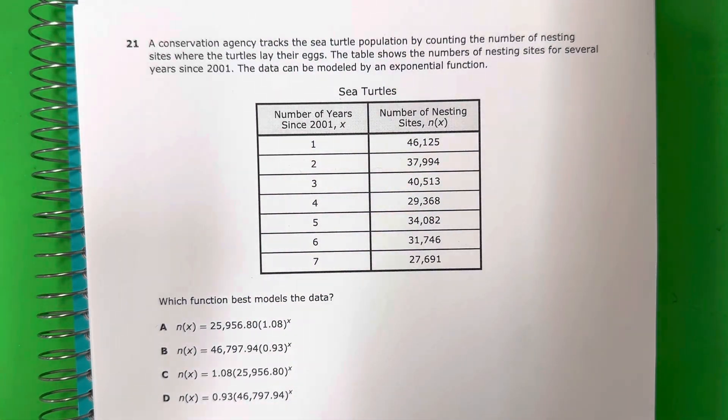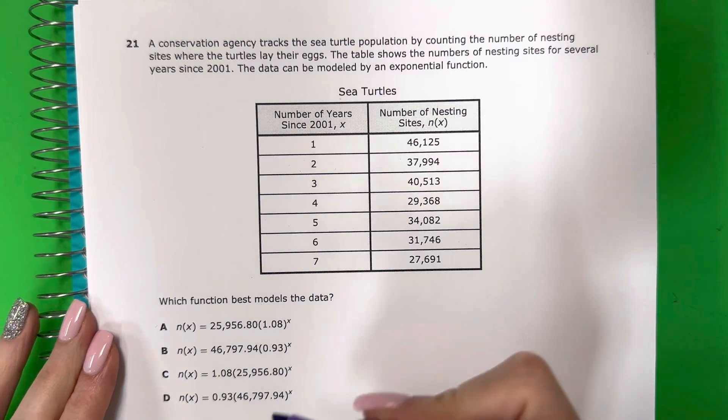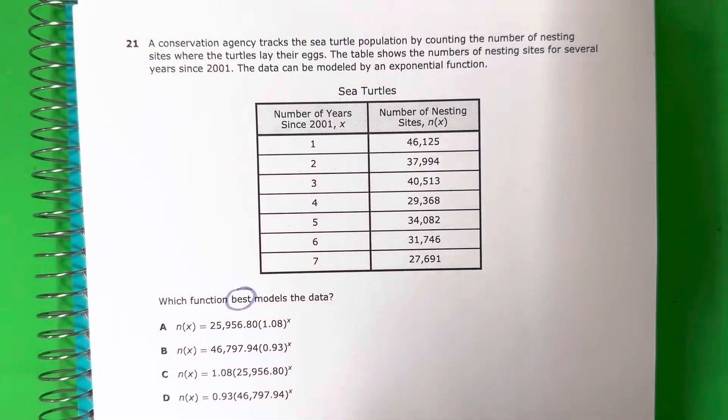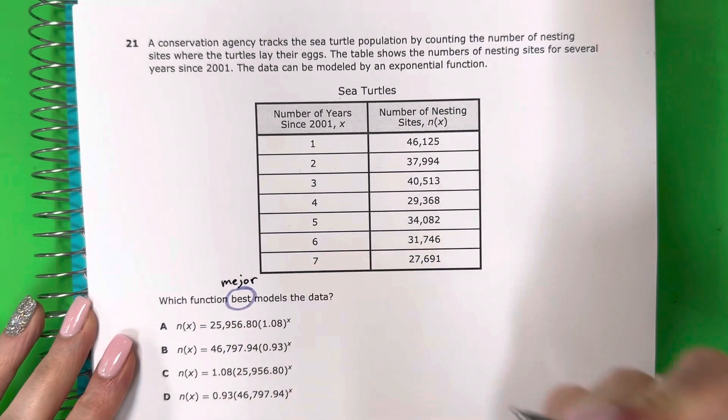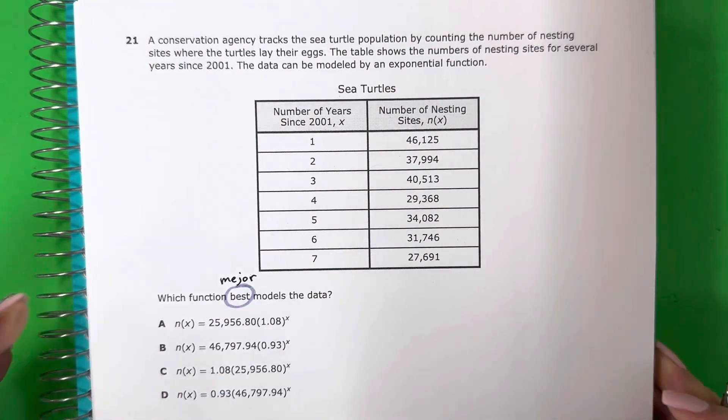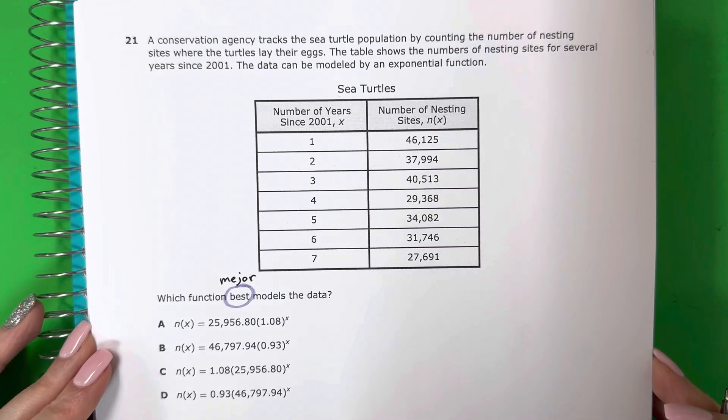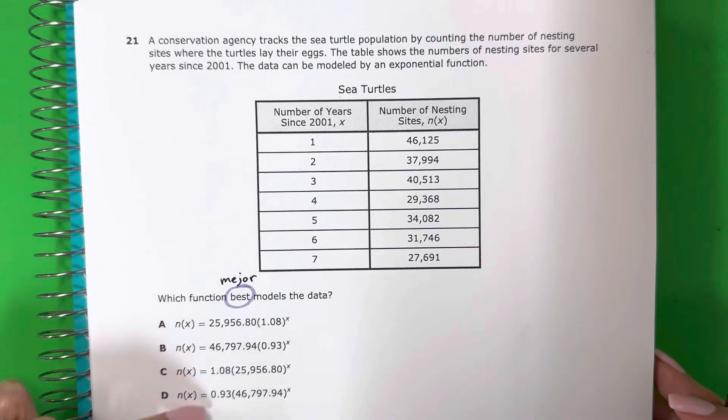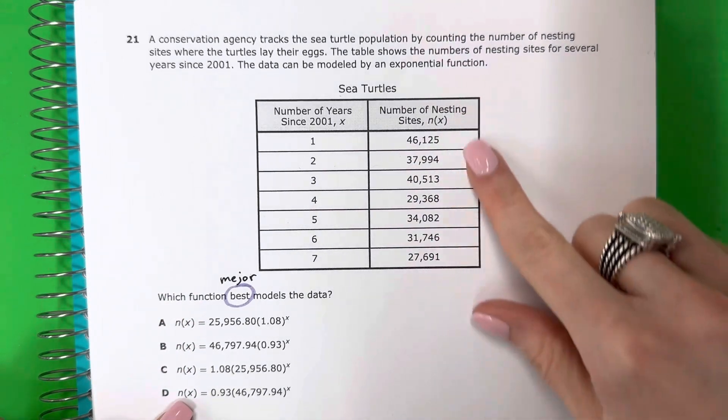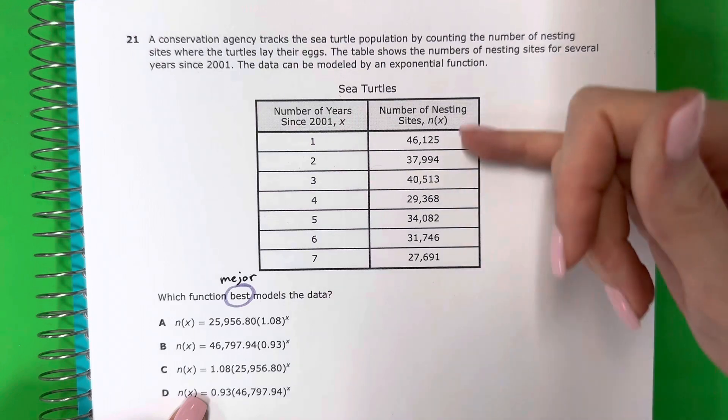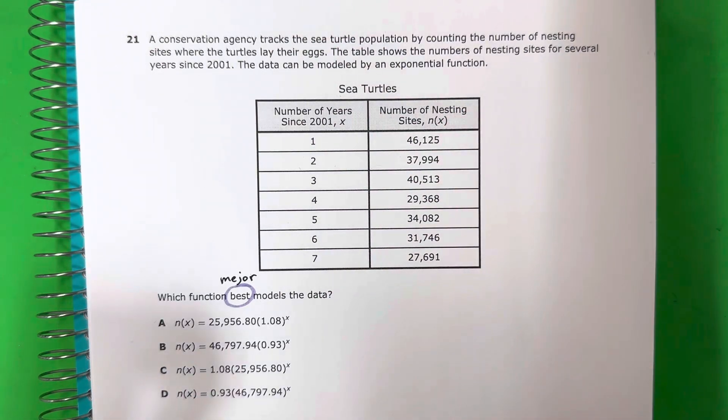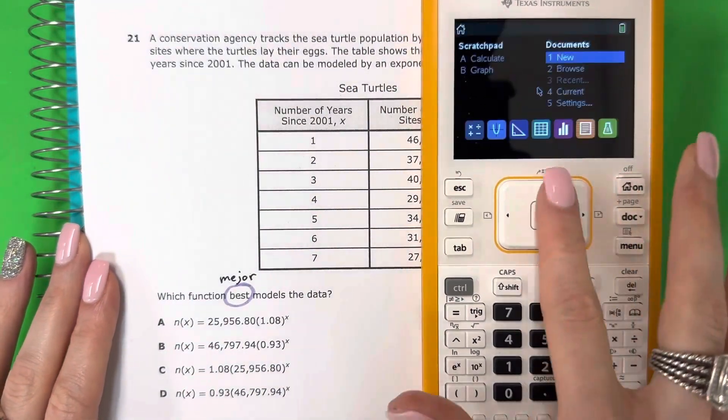But let me show you one thing about the vocabulary. I want you to notice this word, best. The best does not mean perfect. El mejor no siempre es perfecto. These, I just need to find which equation will give me the closest numbers. They are not going to be exactly the same. We are just going to pick the best one. Vamos a seleccionar la mejor.